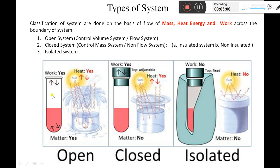Whenever this test tube is kept in sunlight, whatever the liquid present inside starts to evaporate due to the sunlight and starts escaping out from that system — it crosses the boundary. So the mass of that liquid keeps decreasing and the mass of air keeps increasing, as the vapor of this liquid gets out of the test tube and an equal volume of air enters the test tube. So liquid is going out of the test tube and fresh air enters in its place. Here, mass exchange takes place across the boundary between system and surrounding.